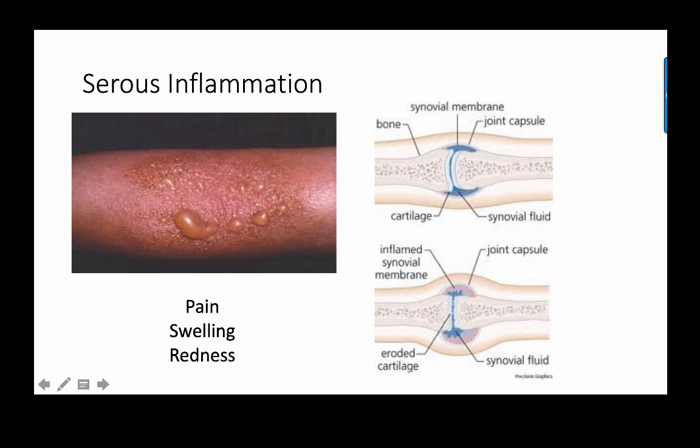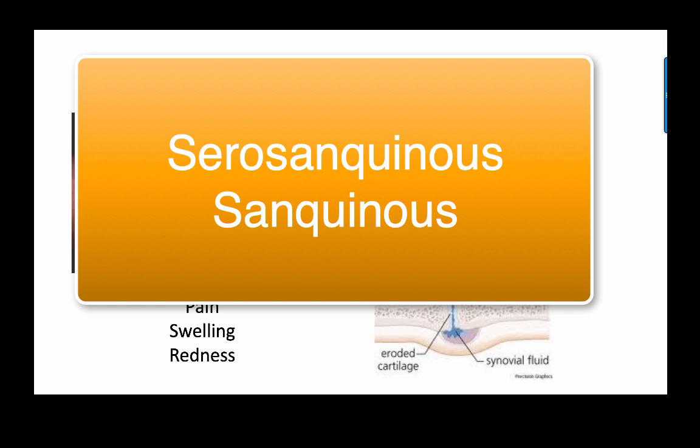Serous inflammation can occur in the peritoneum — the lining of the abdominal organs — or in a joint, where the synovial membrane becomes inflamed and accumulates a large amount of serous fluid. Serous inflammation can be very painful because there are many nerve endings in the affected organs, and those nerve endings become irritated as fluid seeps into the extracellular space. Redness occurs due to increased blood flow to the area. This is really the initial phase of inflammation.